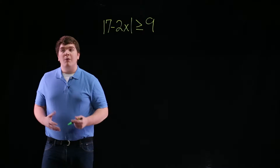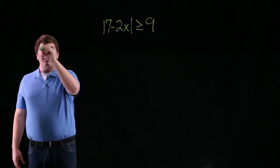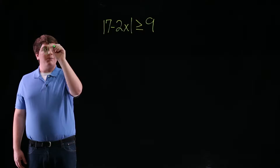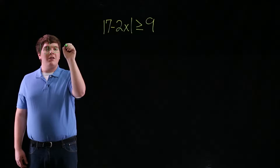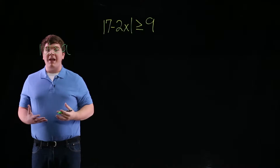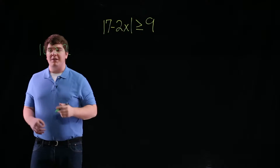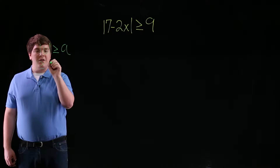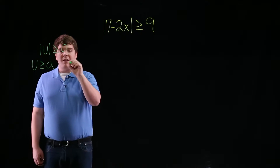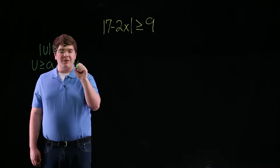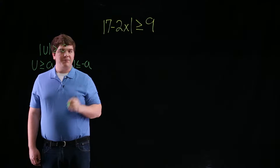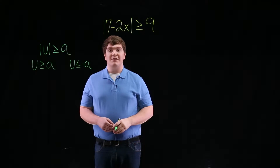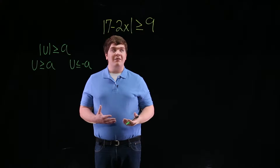In order to solve this problem, we'll want to recall that any time we're trying to solve a problem of the form |u| greater than or equal to some number a, we really wish to solve two equations: u is greater than or equal to a, and u is less than or equal to negative a. In this case, our u is 7 minus 2x, and our a is 9.